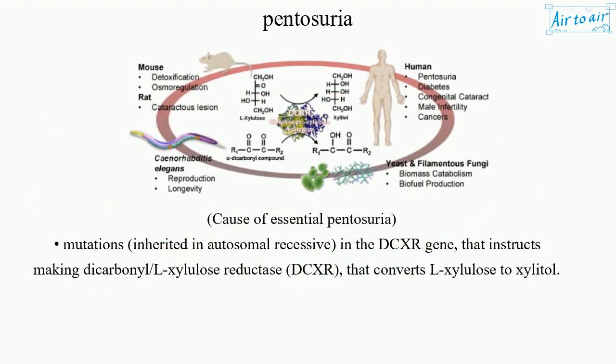Cause of essential pentosuria: mutations inherited in an autosomal recessive manner in the DCXR gene, which instructs the making of dicarbonyl L-Xylulose reductase (DCXR), an enzyme that converts L-Xylulose to xylitol.